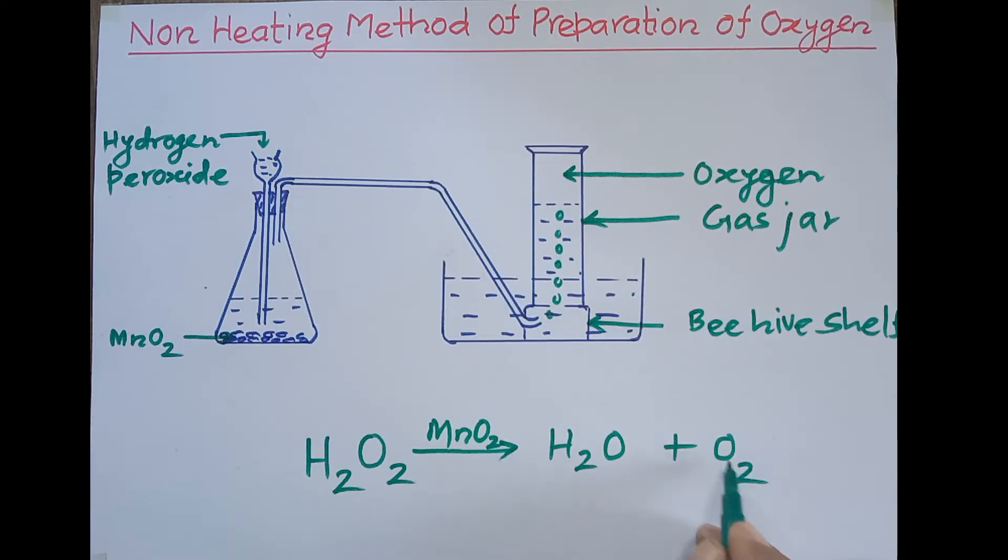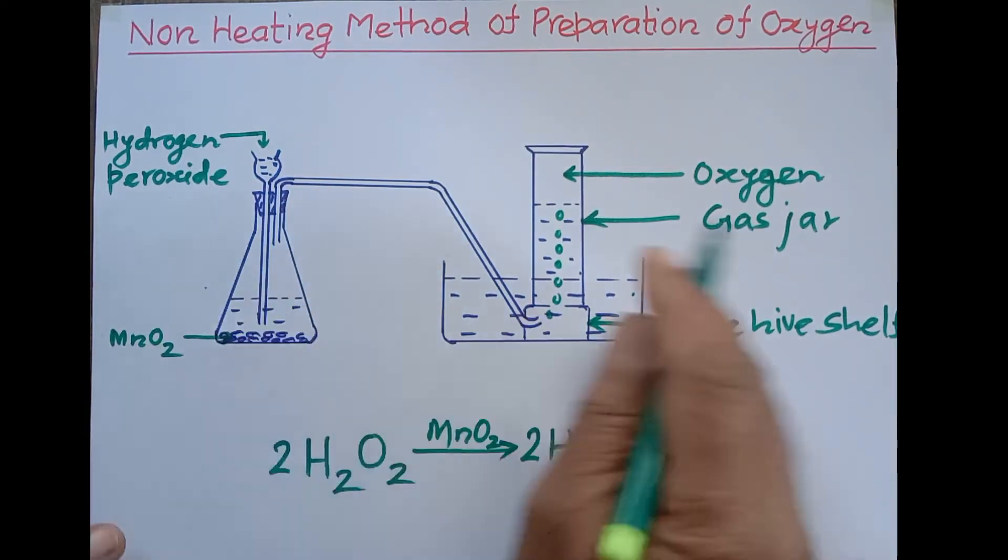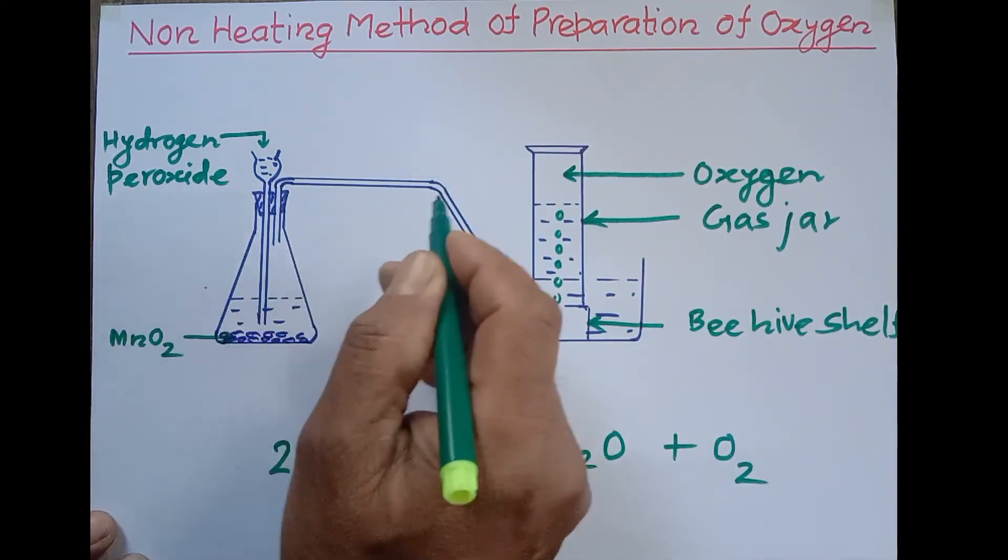Now I want to balance this equation. Oxygen is 2 here, 1+3 here is odd. If we take 2 here, 2 plus 2 becomes 4, and if we take 2 here it is balanced. So: 2H2O2 → 2H2O + O2.